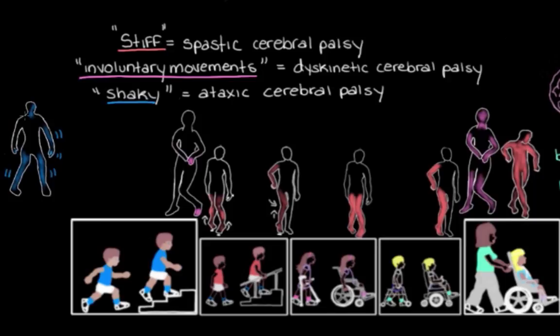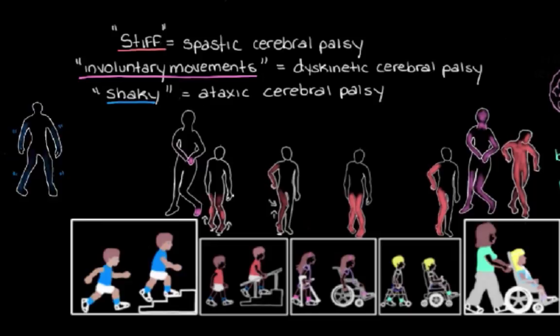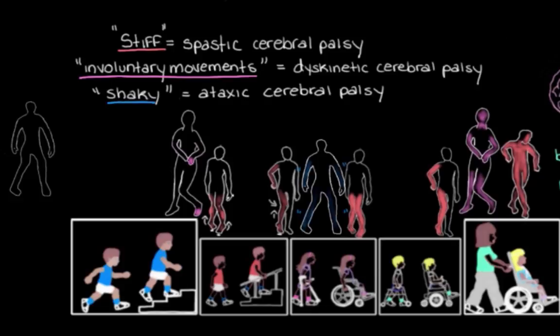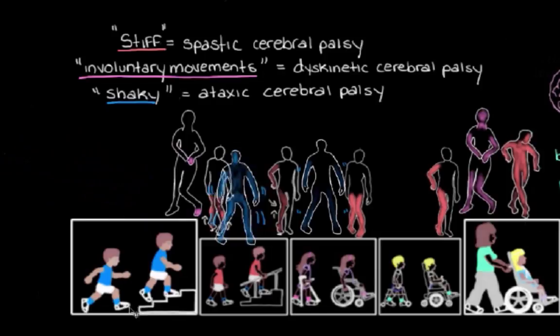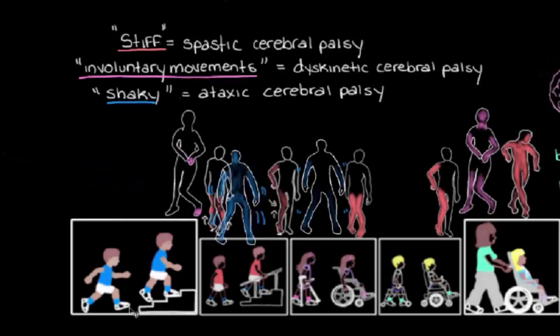For someone with ataxic cerebral palsy, if the cerebellum isn't too damaged they might be on the milder end — able to get around independently or with crutches or a walker. But if the cerebellum is significantly damaged and the shakiness is severe, they may need a wheelchair, placing them on the more severe end. These are the three main types of cerebral palsy — spastic, dyskinetic, and ataxic — and while they are distinct, it's not uncommon for them to occur together, such as someone with spastic CP also having involuntary movements or shakiness.